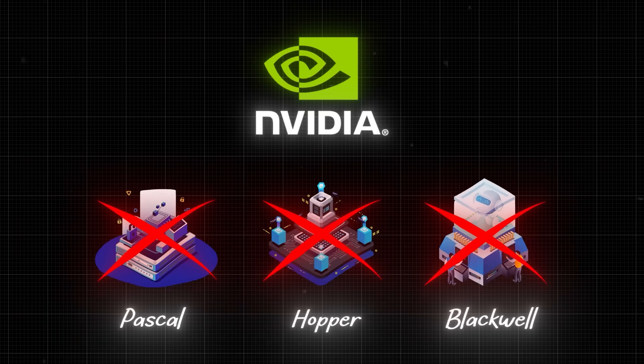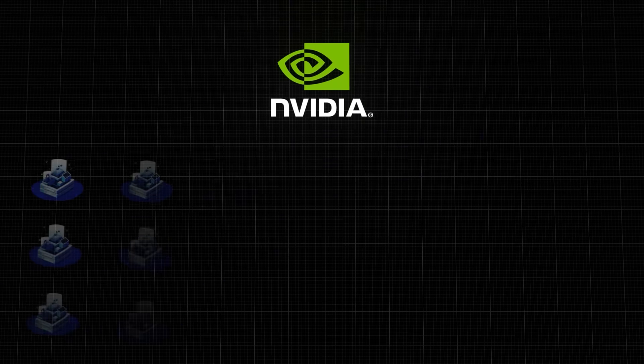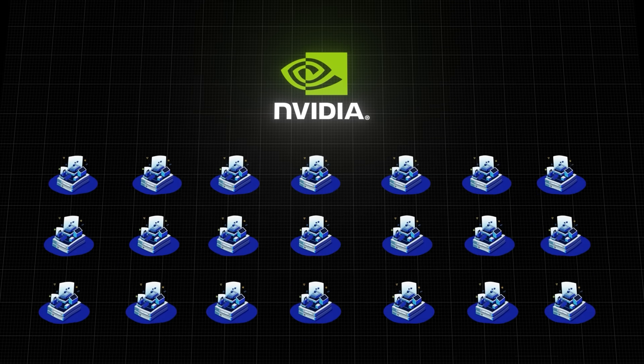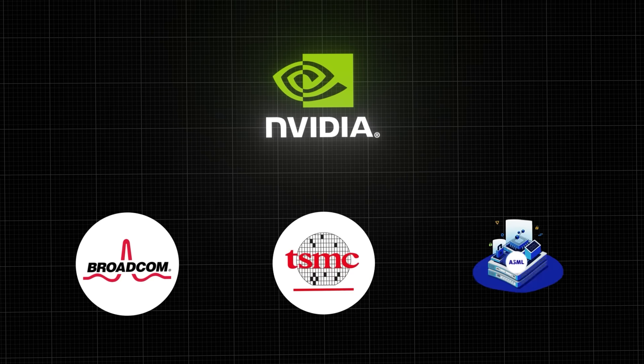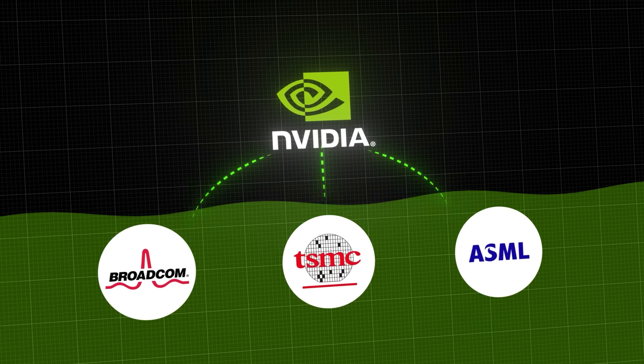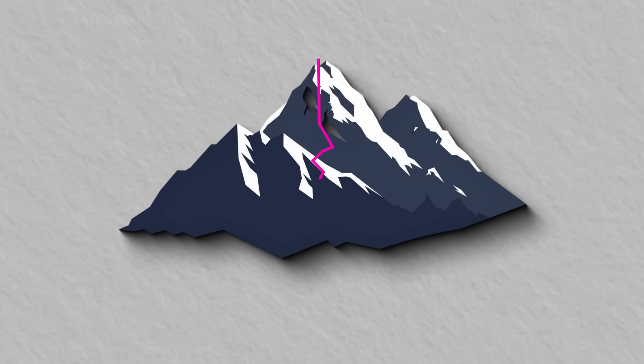But NVIDIA doesn't build these factories alone. They depend on hundreds of companies to bring them to life. Some of the world's richest giants, Broadcom, TSMC, and ASML, owe much of their new wealth to these systems.